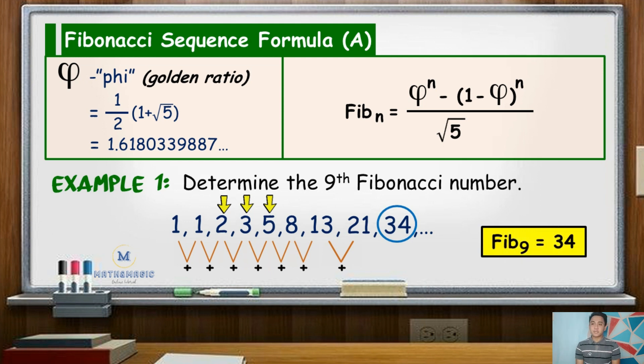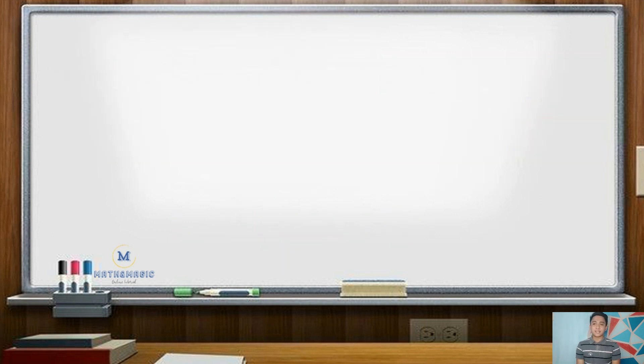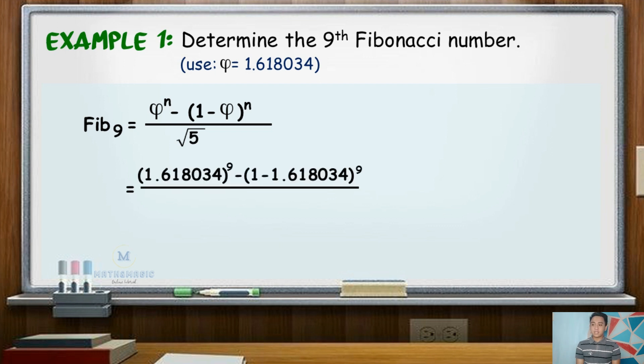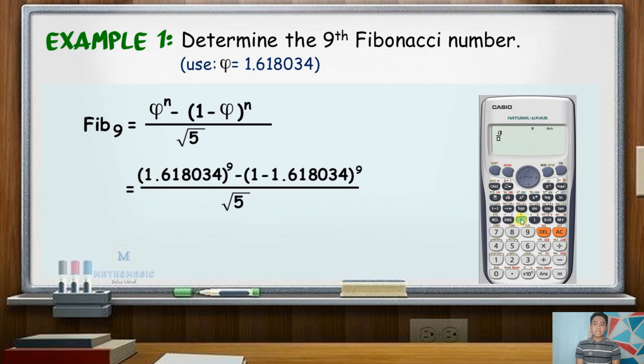Using the formula with golden ratio as an alternative method, we say that the ninth Fibonacci number is given by Fib_9 equal to the golden ratio raised to n minus the nth power of quantity 1 minus the golden ratio, all over square root of 5. Here, n value is equal to 9.